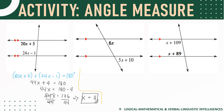For figure number 2: they are corresponding angles, which are congruent. So 6x equals 5x plus 10. Isolating terms with variables, we get x equals 10. To check: 6 times 10 is 60; 5 times 10 is 50 plus 10 is 60. They are both 60, so that is correct.